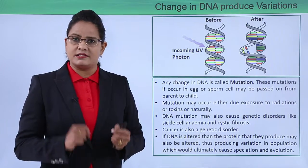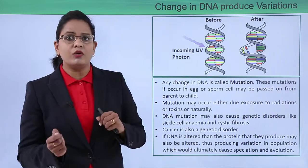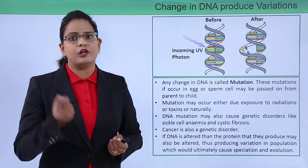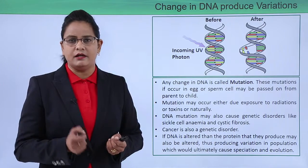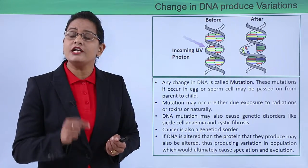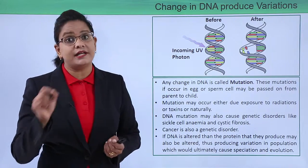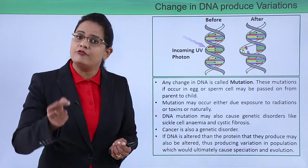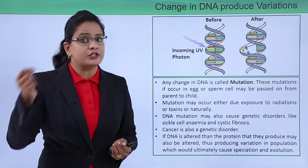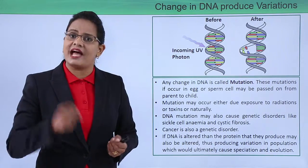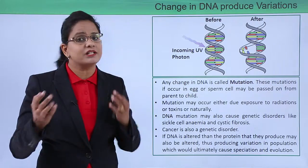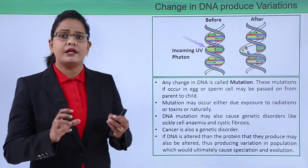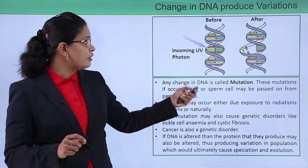Have you seen that eye color differs? Some have brown eye color, some have blue eye color, and some have the regular black eye color. This is what is called a change in the DNA. This change in the DNA leads to a change in the protein, and therefore there are changes amongst two human beings.